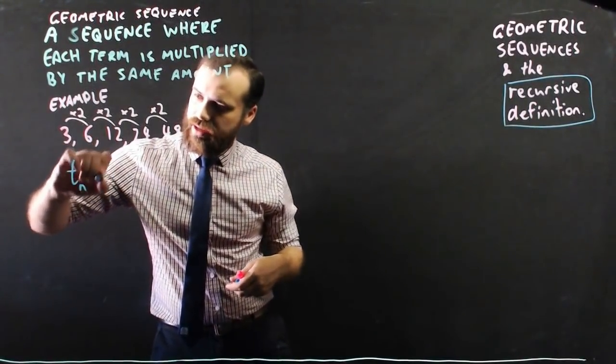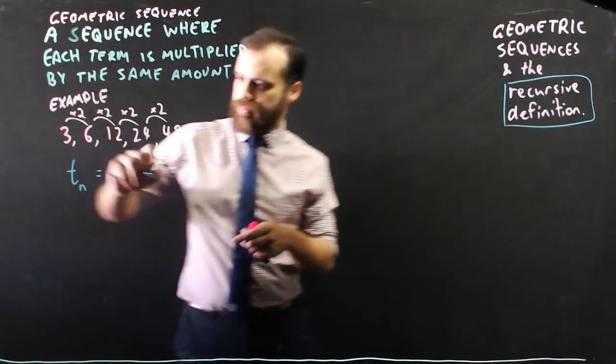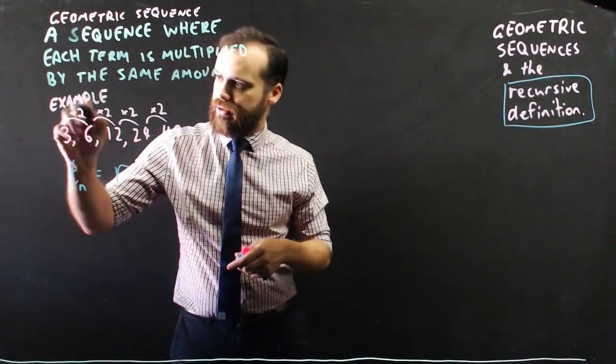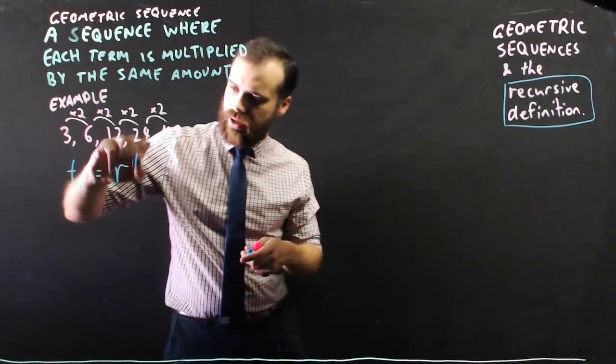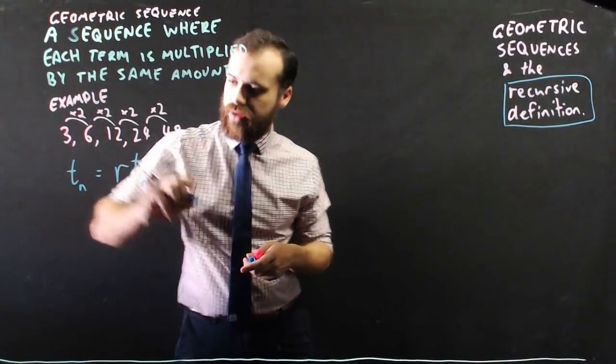Term n is equal to r, where r is the common ratio, times the previous term.